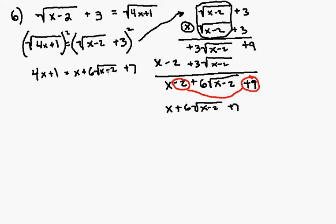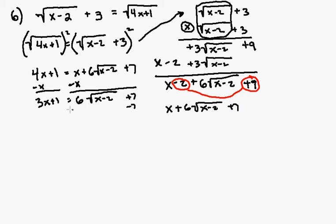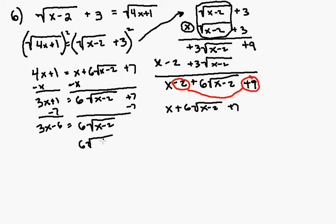Our goal is to get the second square root isolated by itself. So I'm going to subtract x from both sides. Now I have 3x plus 1 is equal to 6 square root of x minus 2 plus 7. I'm going to subtract 7 from both sides, giving me 3x minus 6 is equal to 6 square root of x minus 2. Now I'll divide both sides by 6.